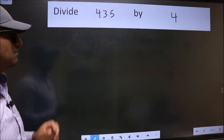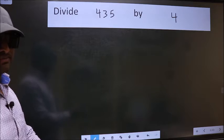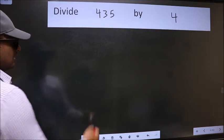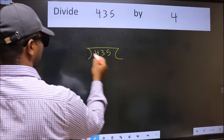Divide 435 by 4. To do this division we should frame it in this way: 435 and 4 here.